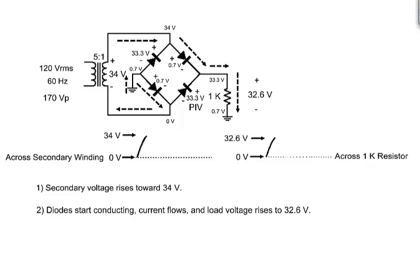The maximum reverse voltage across the two reverse bias diodes, called peak inverse voltage or PIV, will be 33.3 volts.